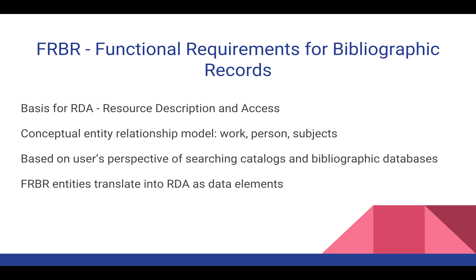Now let's talk about FRBR — Functional Requirements for Bibliographic Records — recommended in 1998 by the International Federation of Library Associations and Institutions. It was designed to restructure catalog databases to reflect how users search. It's made up of groups of entities and is the basis for RDA. The main entities are the work — the body of the work, such as Hamlet — created by a person, William Shakespeare. You take those two and combine them together to discover the subjects.